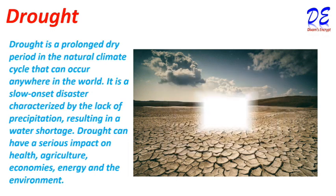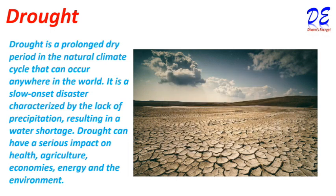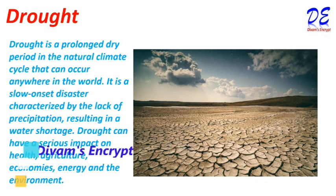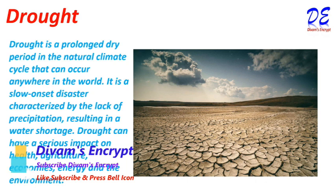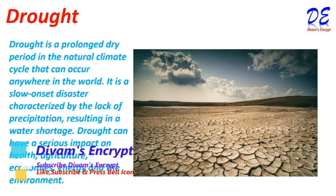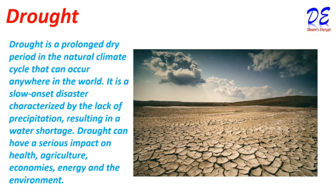Drought. A drought is a prolonged dry period in the natural climate cycle that can occur anywhere in the world. It is a slow-onset disaster characterized by the lack of precipitation, resulting in a water shortage. Drought can have a serious impact on health, agriculture, economies, energy, and the environment.